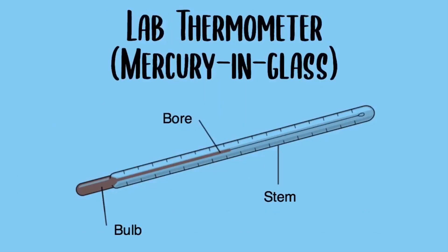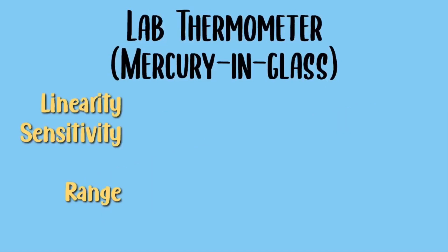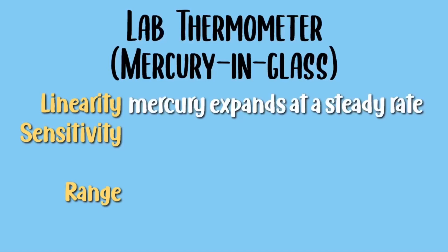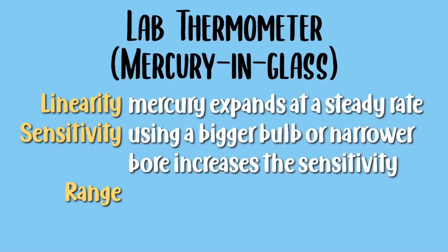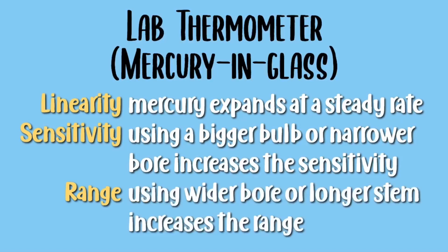Now let's talk about the lab thermometer, also known as mercury-in-glass. When picking a thermometer it is important to consider the linearity, sensitivity, and range. For example, mercury expands at a steady rate. Using a bigger bulb or narrower bore increases the sensitivity. Using a wider bore or longer stem increases the range.